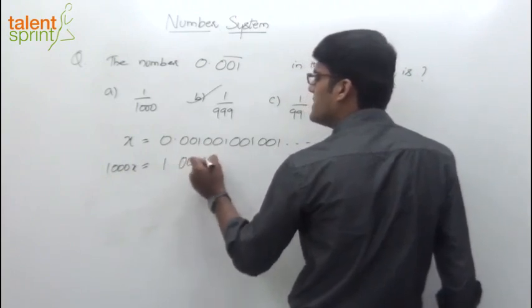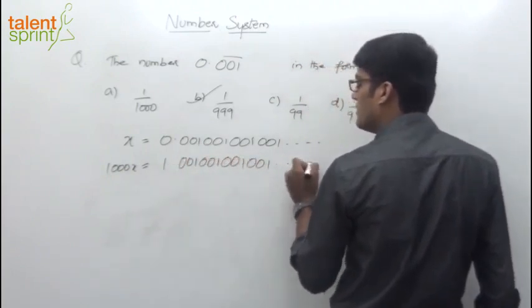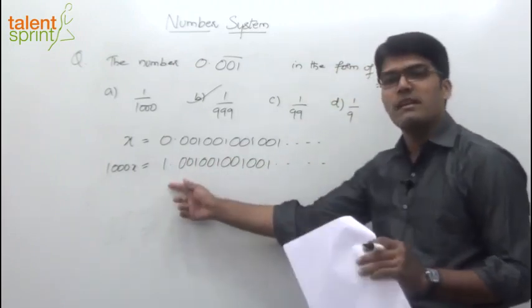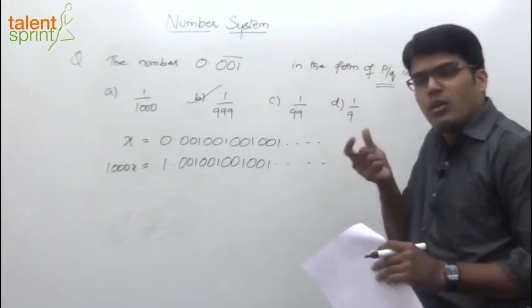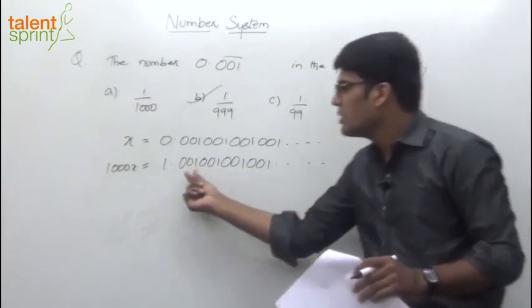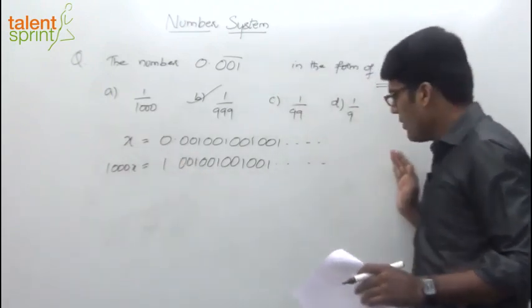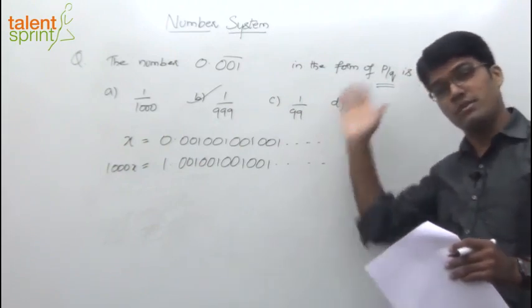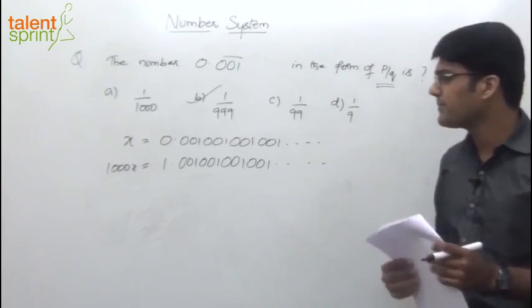Don't worry that one set of 001 will be reduced here. It goes up to infinity, which is never ending, so you can neglect it. Because we have moved it by 3 places, it does not mean one set of 001 will reduce — it goes up to infinity.